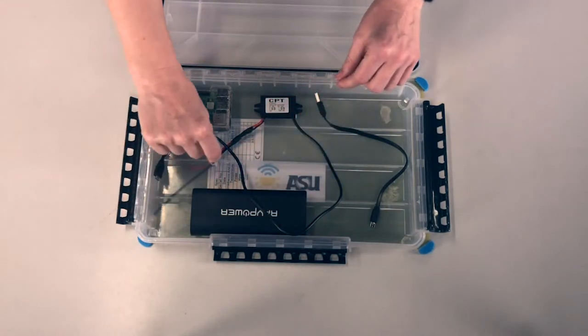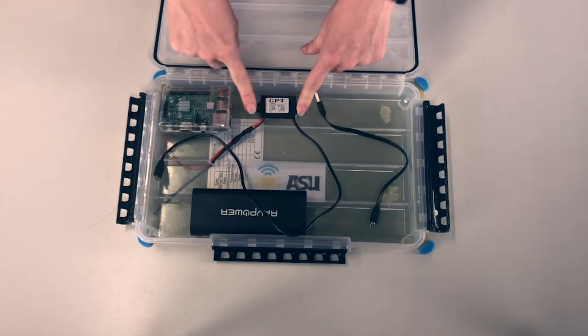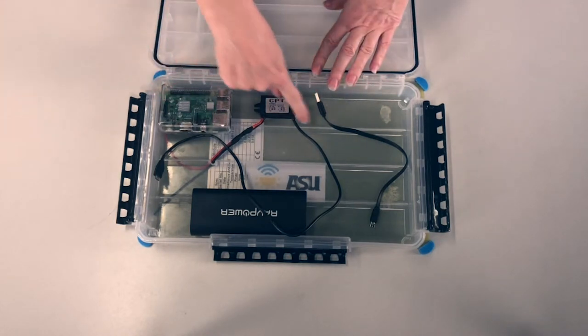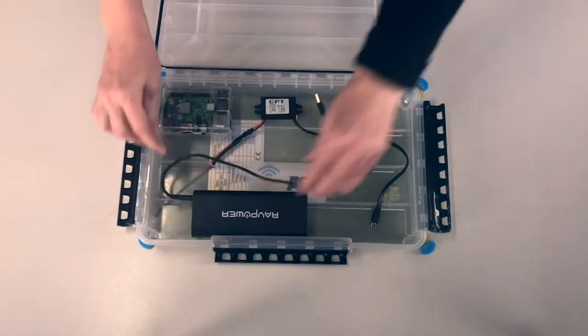You can see the wires coming off of the solar panel. We plug those into a voltage regulator so that there are no spikes of power coming off of the solar panel, and the voltage regulator allows us to plug this cord directly into a battery.